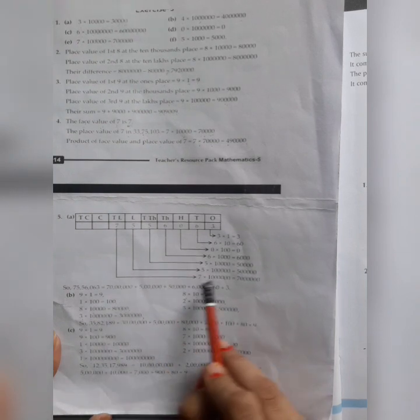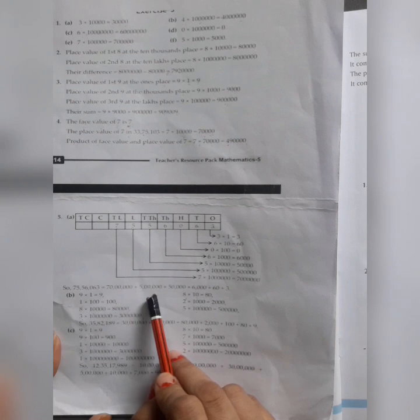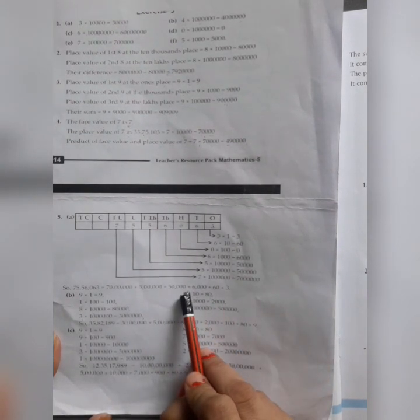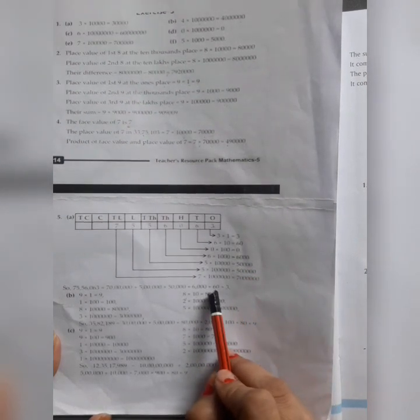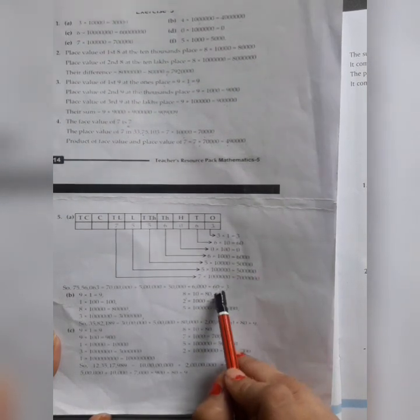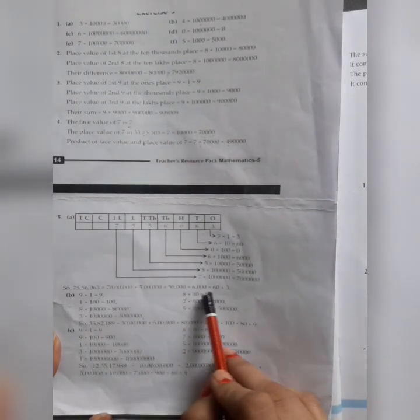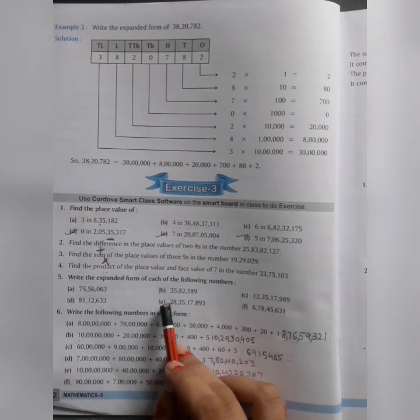Multiply by lakh, 5 lakh. We write 5 lakh. Again 50,000. 5 gives 50,000. 6 gives 6,000. 0, we write 0. Then 60, then 3. Now see how big the number became. So this is how to expand and write. Okay?